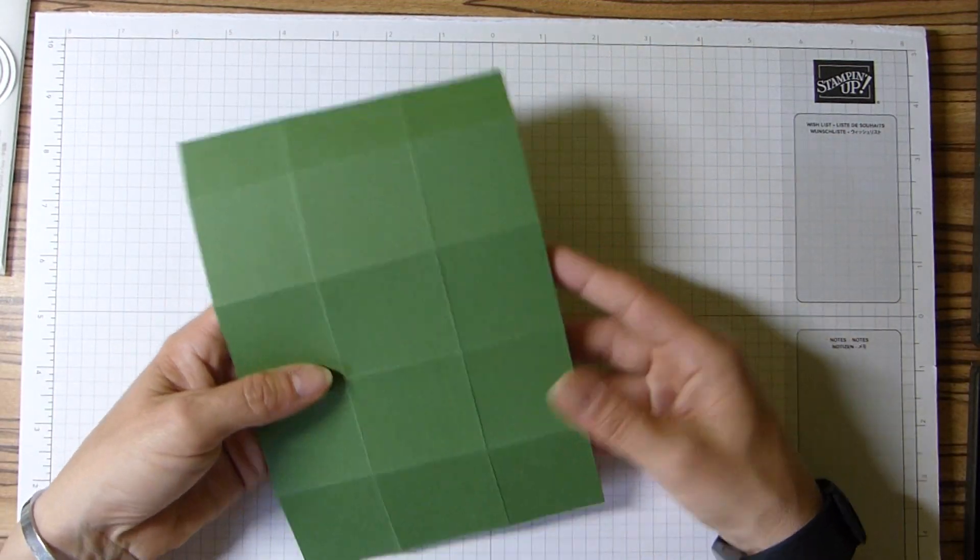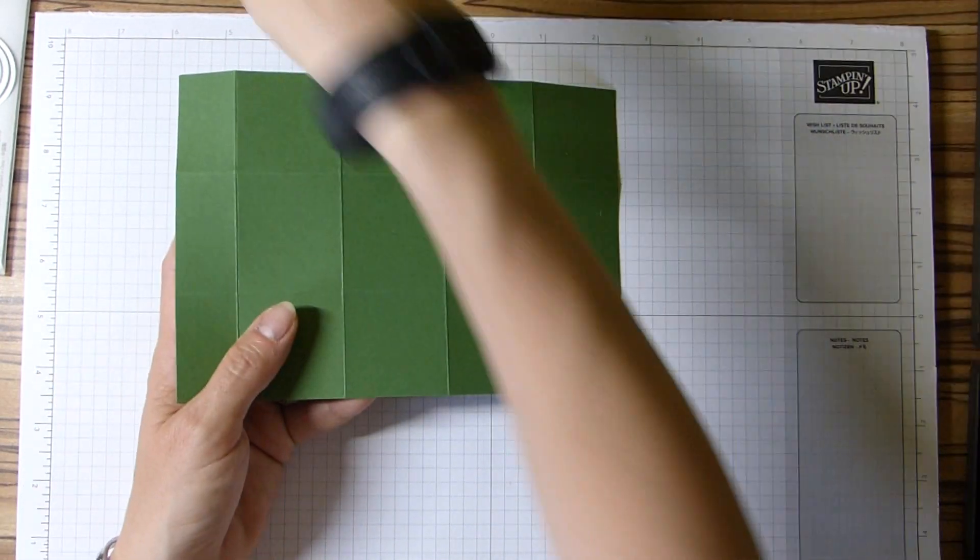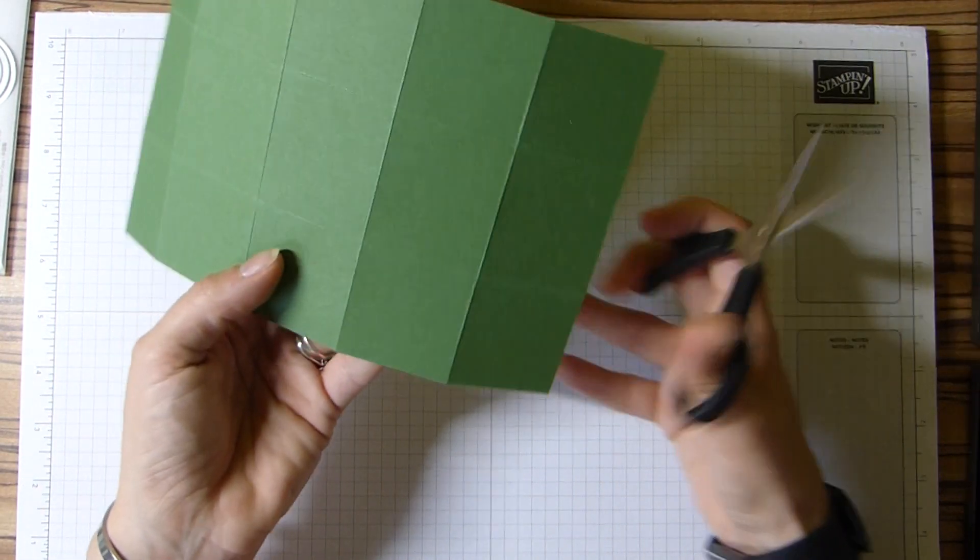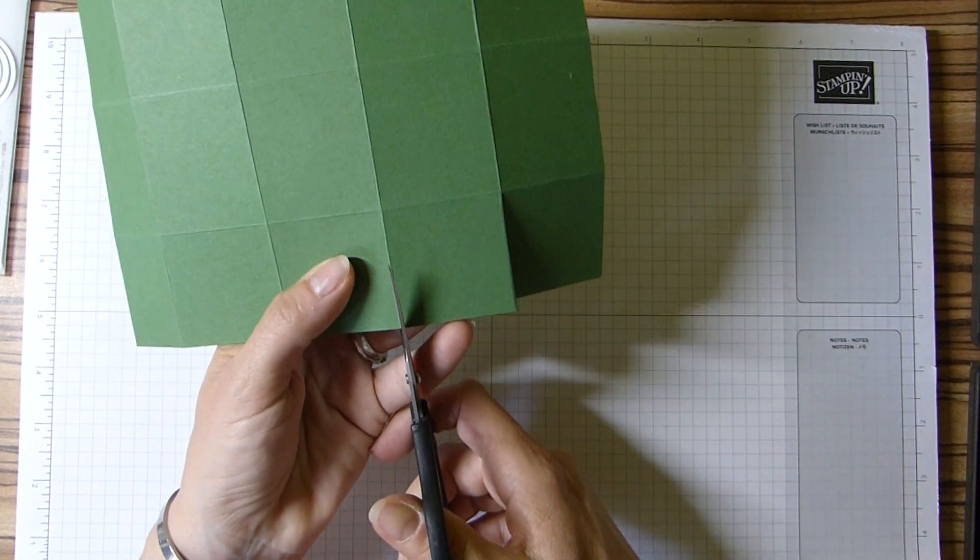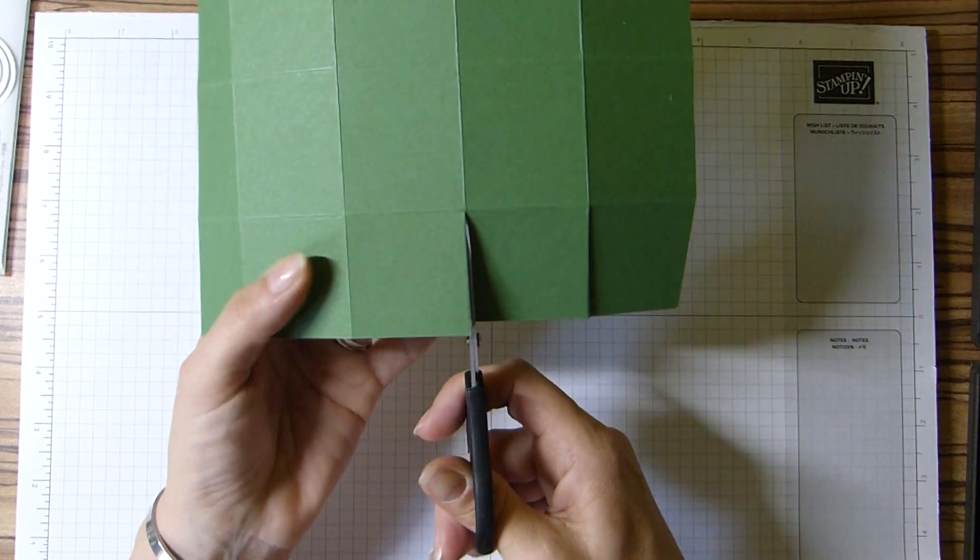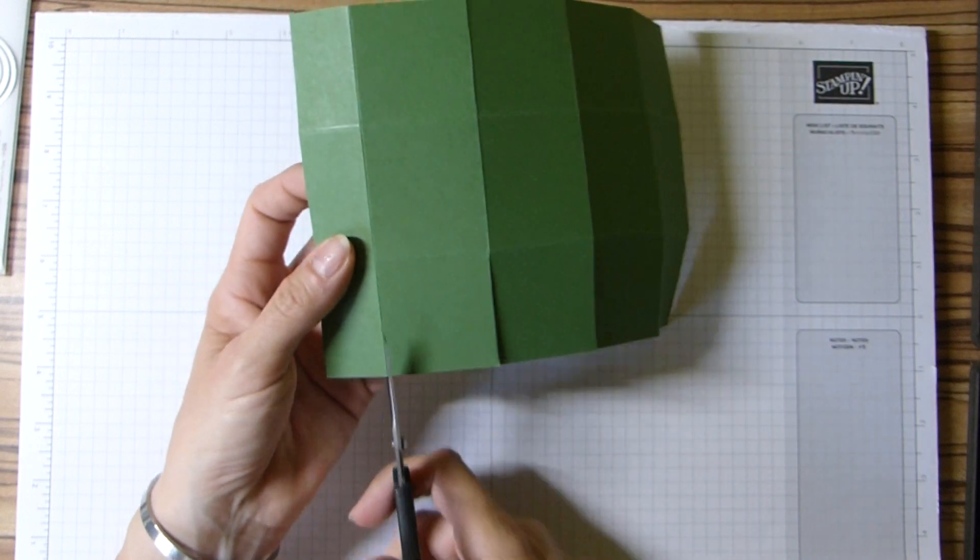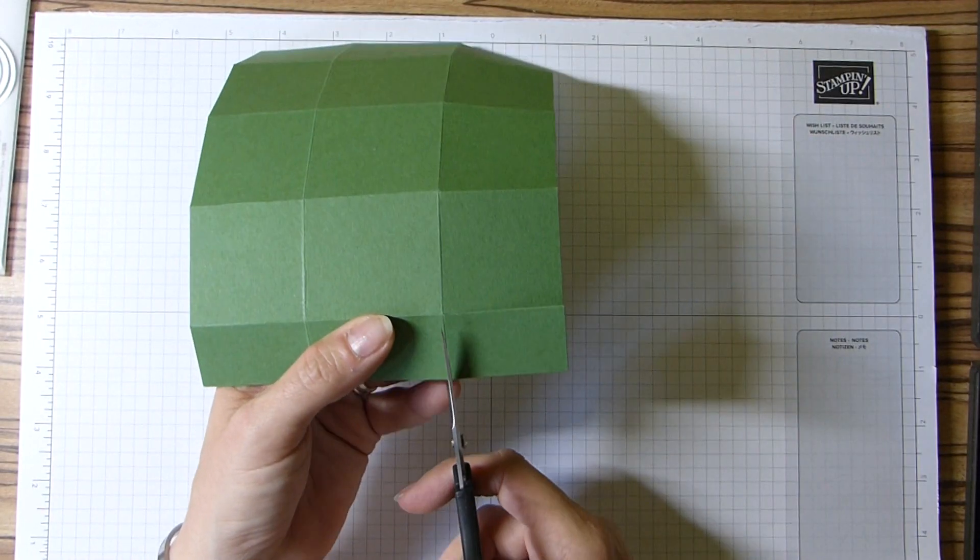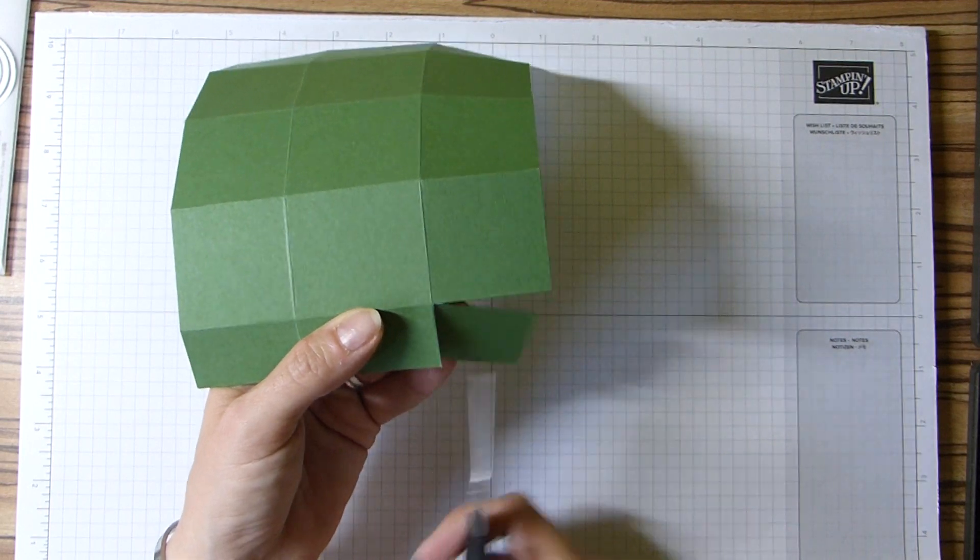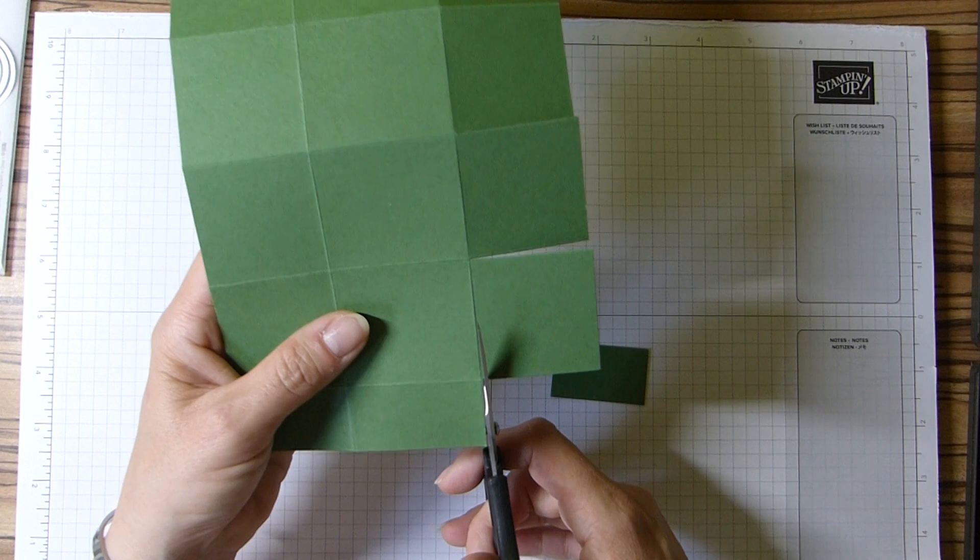We're going to turn it sideways so we have this small section to the left, and what I'm going to do is simply cut down each section. Then we're going to cut away this small one here. No tabs though - everything is cut straight. I'm also cutting away this first one here too.